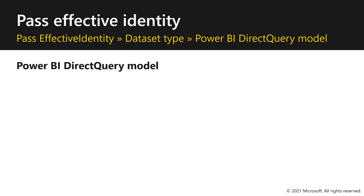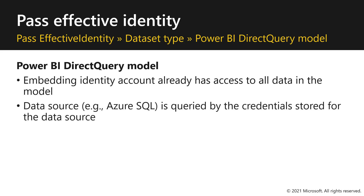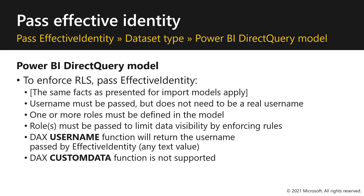For Power BI direct query models, the embedding identity account already has access to all data in the model. For data sources like Azure SQL, they can be queried by the credentials stored by the data source. If no effective identity is passed, all users can view all model data according to the permissions of the data source account. To enforce row-level security, pass effective identity. The same facts as for import models apply: the username must be passed but does not need to be a real username. One or more roles must be defined and passed to limit data visibility. The DAX username function returns the username value of the effective identity, and the custom data function is not supported.